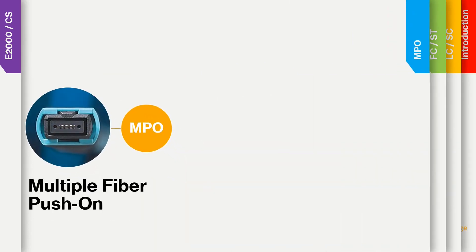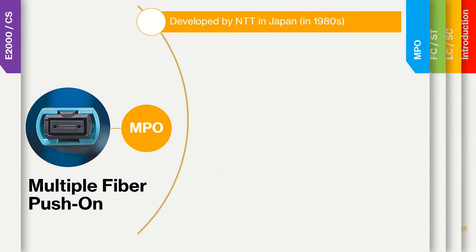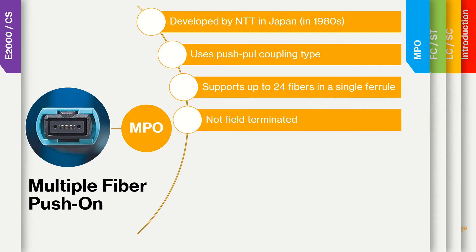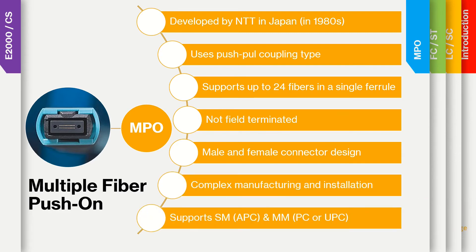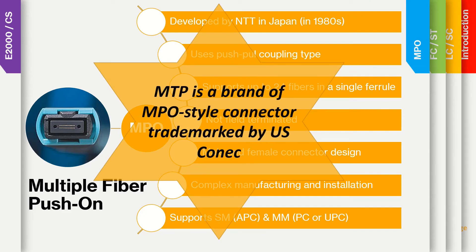Another connector from Japan, developed by NTT in the late 1980s, is the MPO. This connector can support 12 or 24 cores in a single ferrule. It is a complex connector that is not possible to terminate in the field. MPO connectors are configured as male with pins and female designs. The use of MPO connectors picked up in the last two decades with higher demand in data centers for higher bandwidths. Single mode MPOs are APC while multi-mode are available in PC and UPC polish. The market may confuse MPO and MTP names; however, MTP is a brand of an MPO-style connector, trademarked by US Conec.